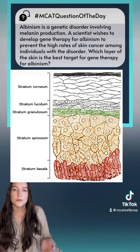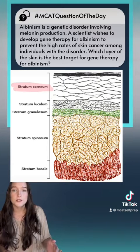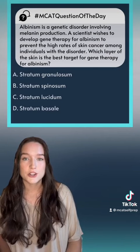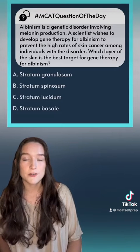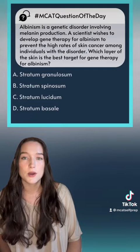As the cells continue to move up, they reach the stratum corneum, which is composed of 15 to 20 layers of dead keratinocytes. Now that we know the structure and function of each of the five layers of the epidermis, we can go ahead and make a logical conclusion for our answer.